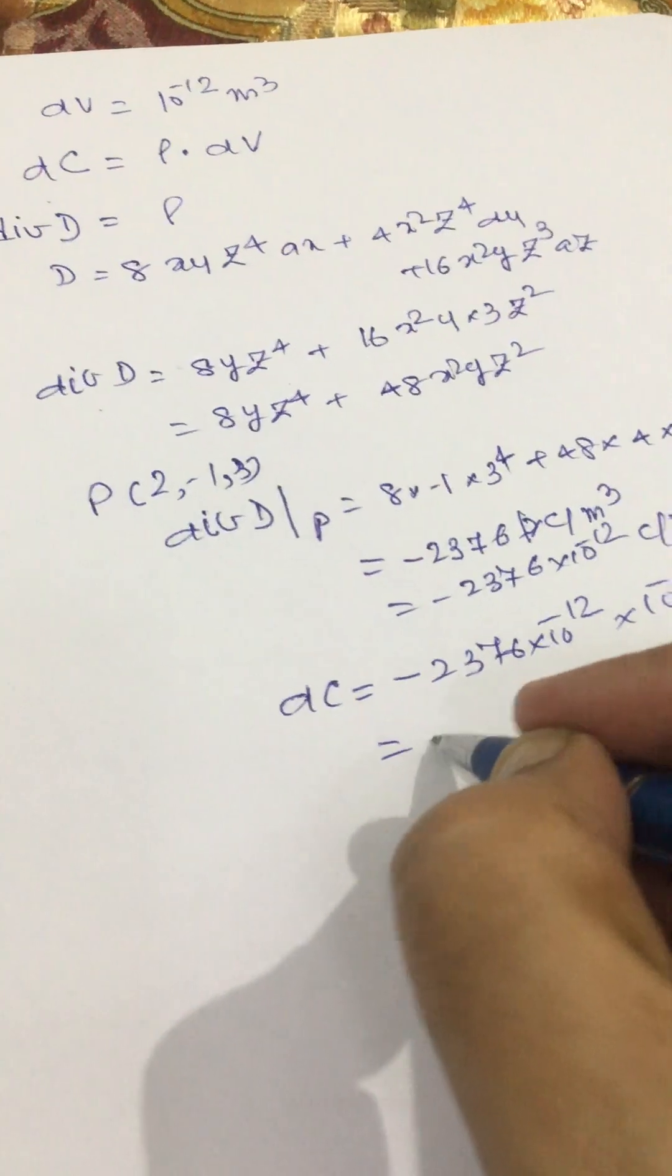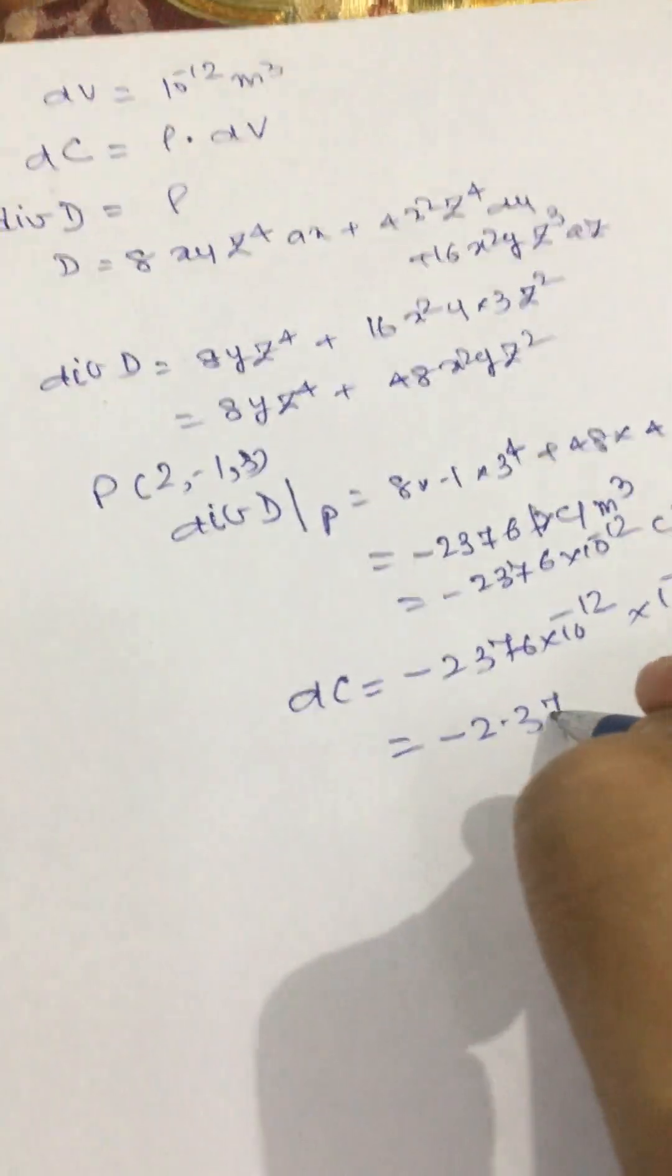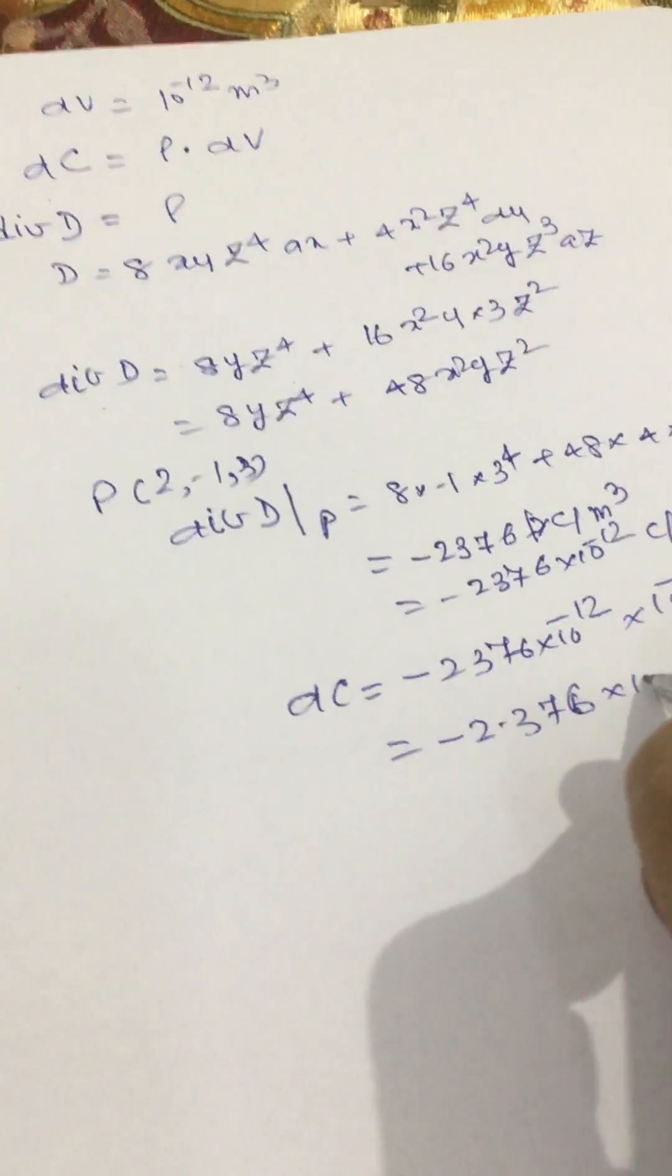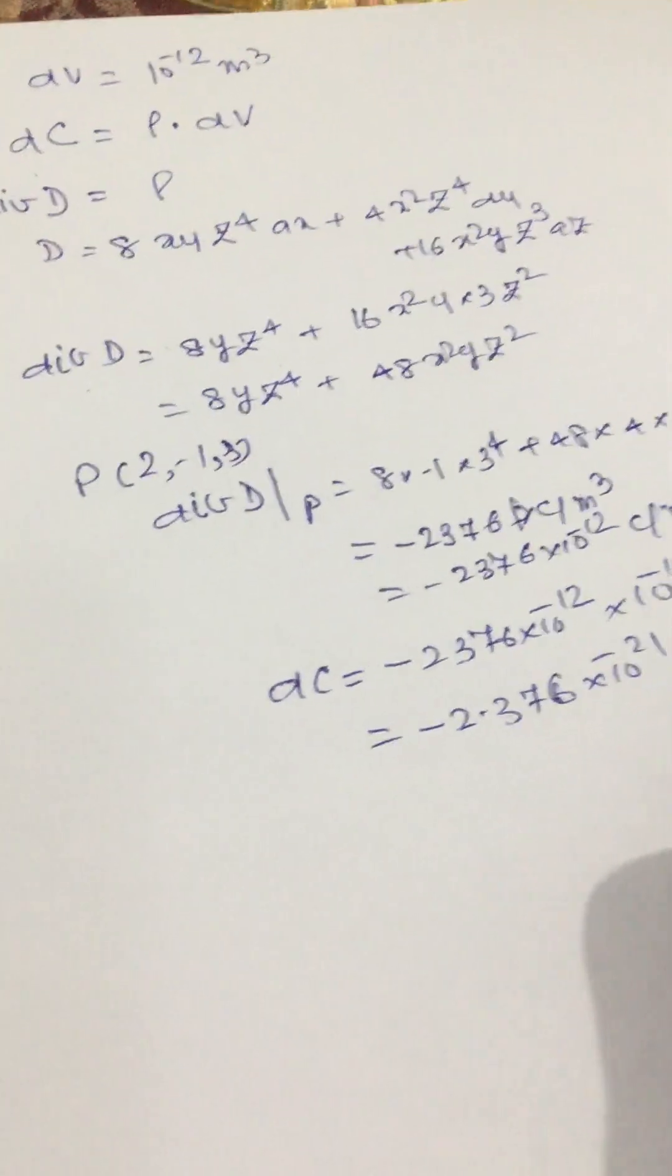If we calculate it, then we will get -2376 into 10 to the power -24 coulomb, and this is our answer.